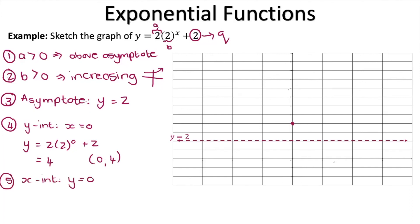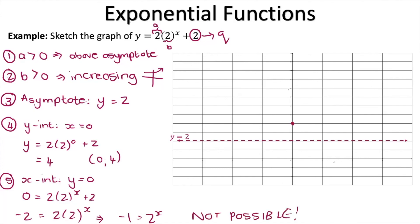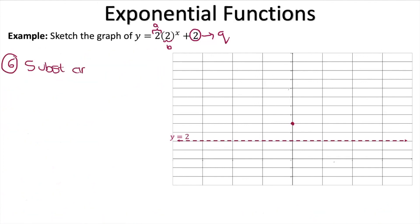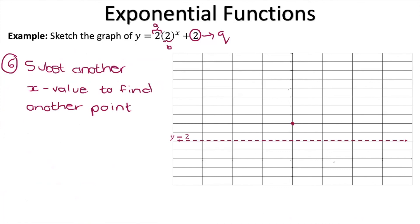Next, find the x-intercept by setting y equal to 0: 0 equals 2 times 2 to the power of x plus 2. Moving the plus 2 over and dividing both sides by 2 gives us negative 1 equals 2 to the power of x. But 2 to the power of x can never be negative — this is the same reason b couldn't be negative. So there are no x-intercepts. Finally, substitute x equals 1 to find an extra point: y equals 2 times 2 to the power of 1 plus 2, which equals 4 plus 2, so 6. We get the point (1, 6).